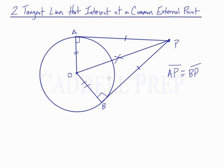So since we know that these two triangles are congruent, we also know that angle APO is congruent to angle BPO. And of course, this angle AOP is congruent to angle BOP.